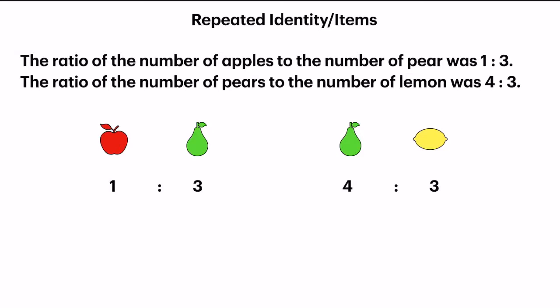As you can see, on the left-hand side, it's 3 units and on the right-hand side, it's 4 units. However, the unit is different in both ratios. So our job here is to change both ratios, left and right, such that the units for the pear is the same. In this case, the common multiple of 3 and 4 is 12.